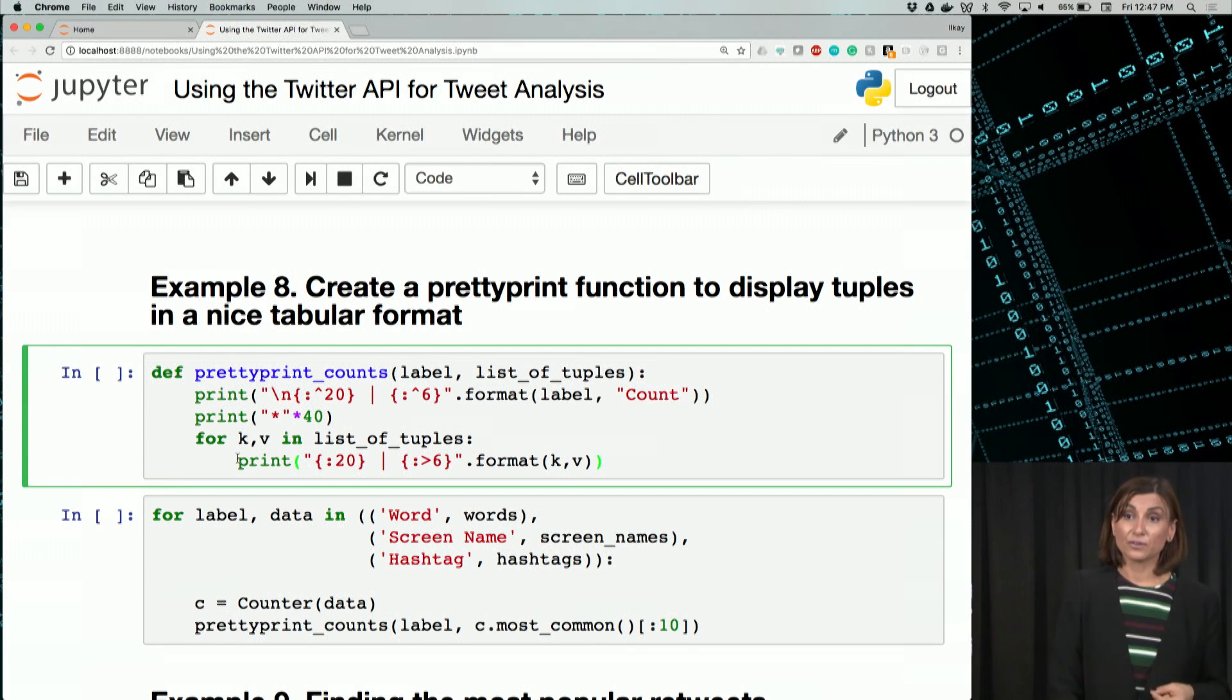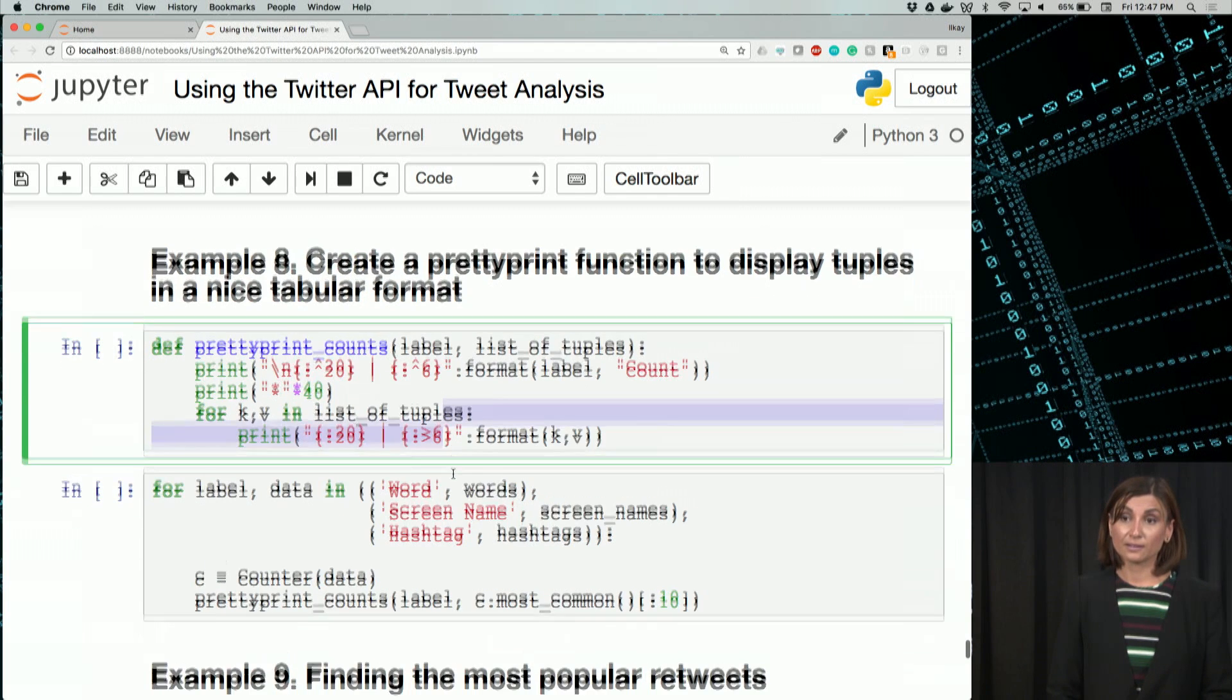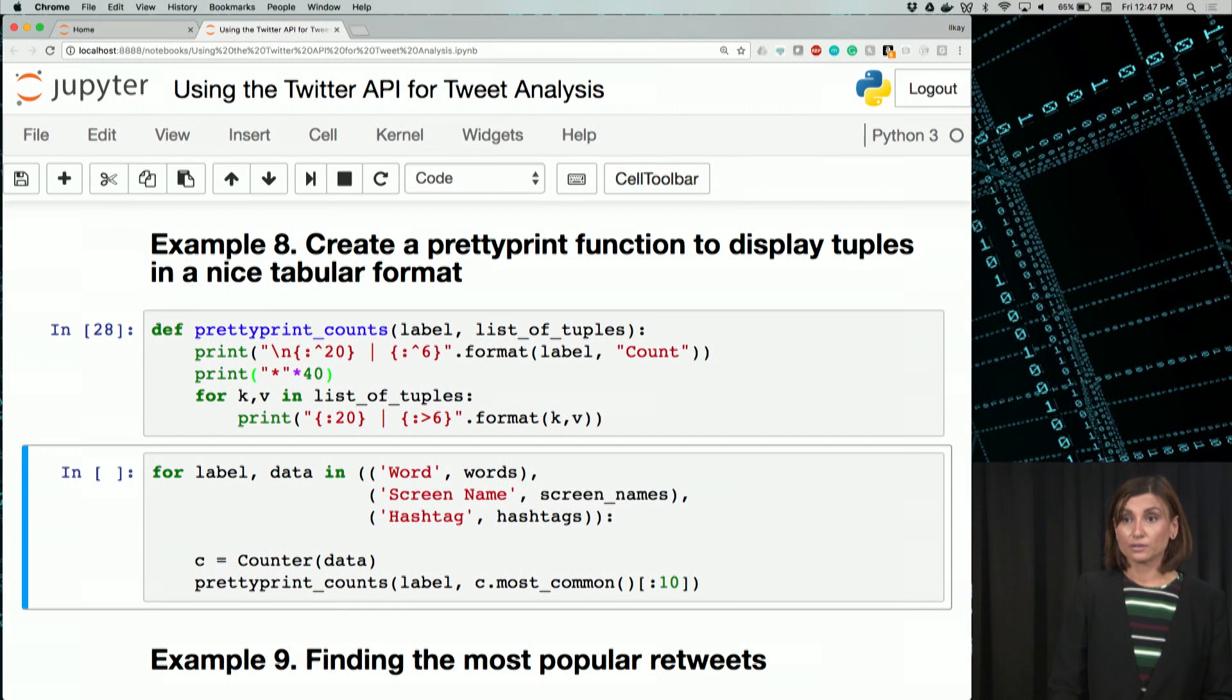And for each K and V in this list of tuples, they are the elements of the list of tuples we are going to receive. We will pad the K to be printed with 20, to complete it to 20 characters by spaces behind it. And let's see, this is going to left align the word.